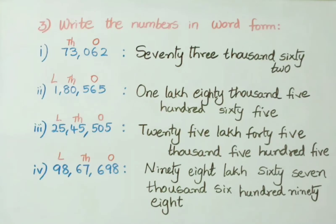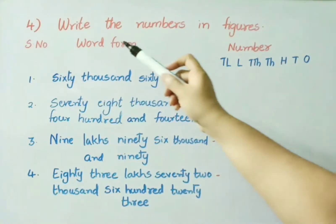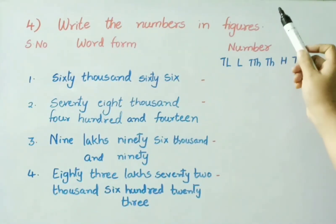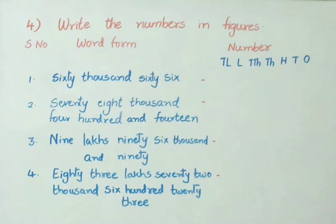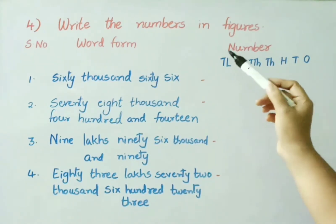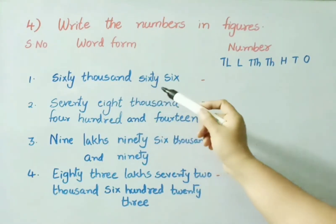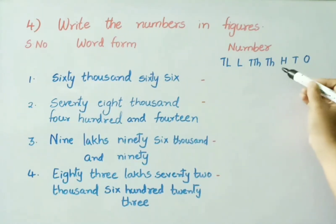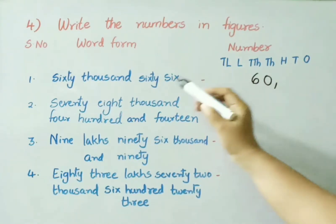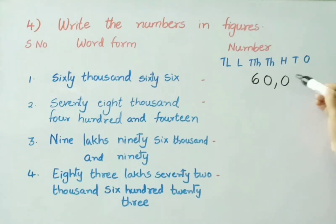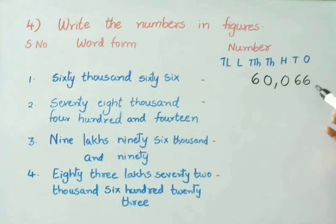Now, let us see the fourth sum: write the numbers in figures. The given question has word form and we need to write the numbers. See the first one: sixty thousand and sixty-six. I have entered the places from 1's up to 10,000's. Under 1000's and 10,000's place, write 60; 100's place has no value — put 0; and write down 66. So, the number is 60,066.